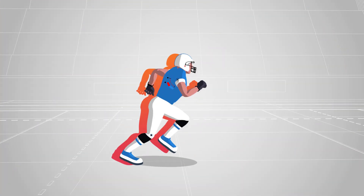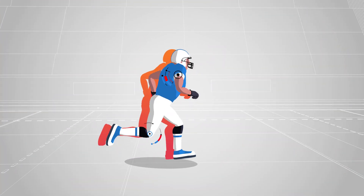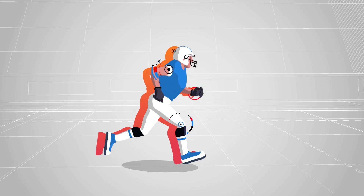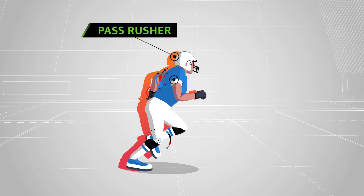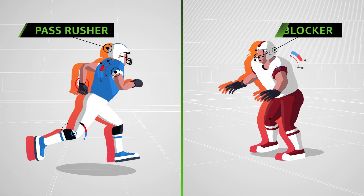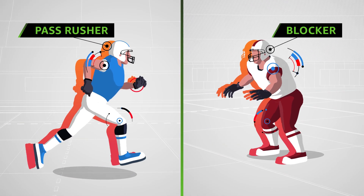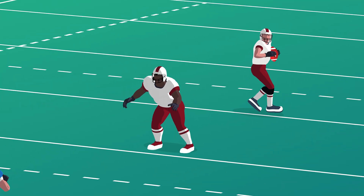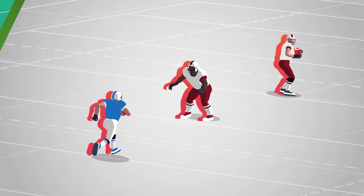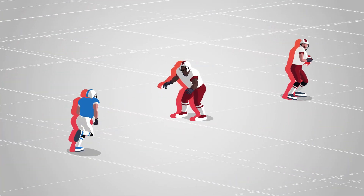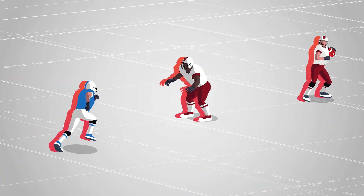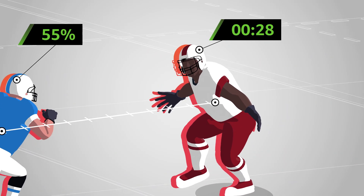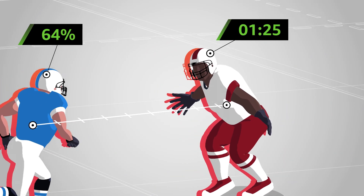Using sensor data from the entire play, the team first had to identify defensive rushers, offensive blockers, and how they match up against each other. Leveraging this data, AWS built an AI model that's able to identify pressure beyond just distance-based logic.